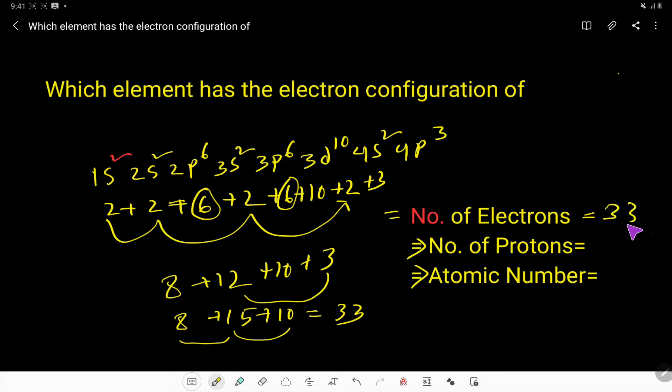So this element has 33 electrons. The number of electrons here is 33. We know that in a neutral atom, the number of electrons is equal to number of protons. As the charge of proton is positive and the charge of electron is negative, in a neutral element the number of protons will be equal to number of electrons. So this is neutral.